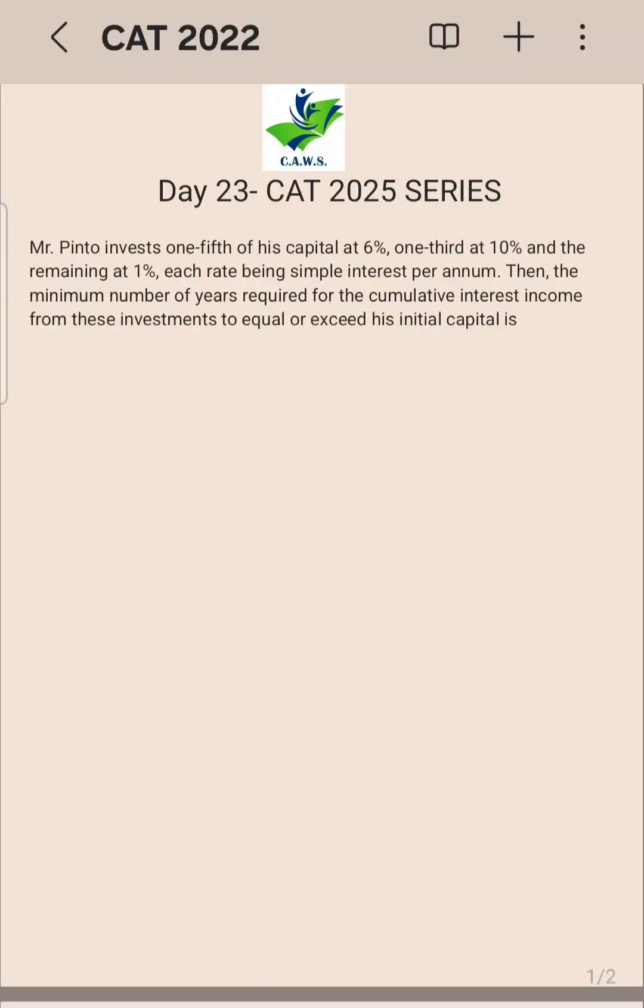This is the CAT 2022 question. It says Mr. Pintu invests one-fifth of his capital at 6%, one-third at 10%, and the remaining at 1%, each rate being simple interest per annum. Then, the minimum number of years required for the cumulative interest income from these investments to equal or exceed his initial capital is...